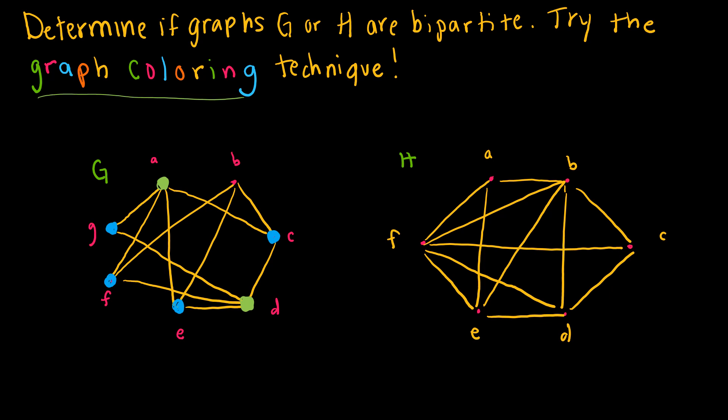D is green and connected to four blue vertices, so that's fine. Now for B: B is connected to blue, blue, and blue, so B can be green. This graph is bipartite — vertices A, B, D form one subset, and C, E, F, G form the other, with all edges going only between the two subsets.